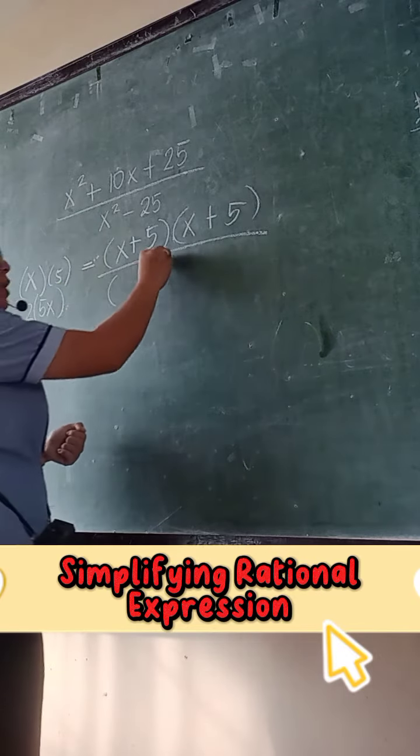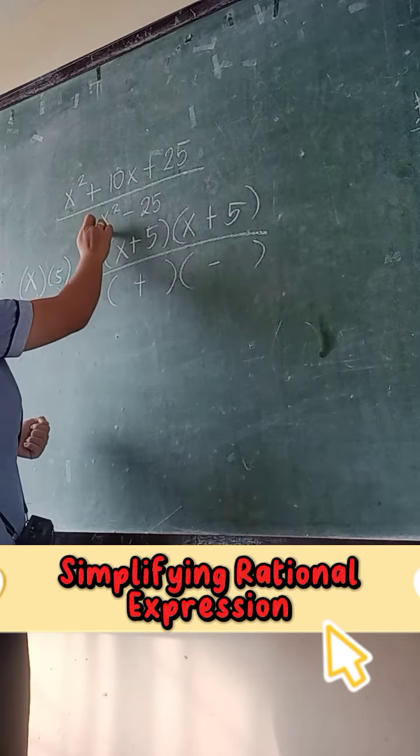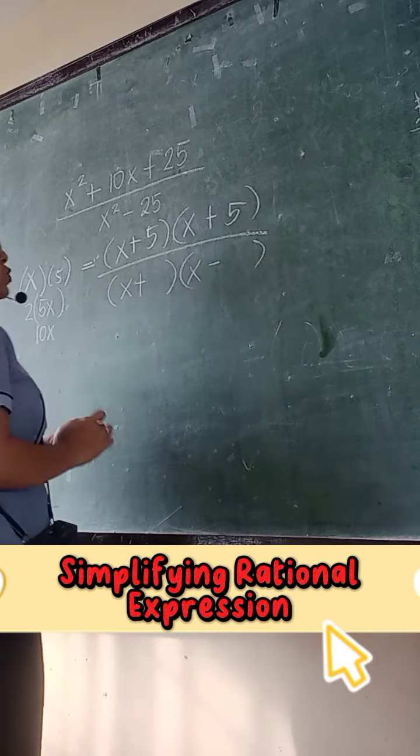So what we're going to do, write two parentheses. Inside the parentheses, we have plus and minus. And get the square root. What is the square root of x squared? X. Square root of 25? 5.